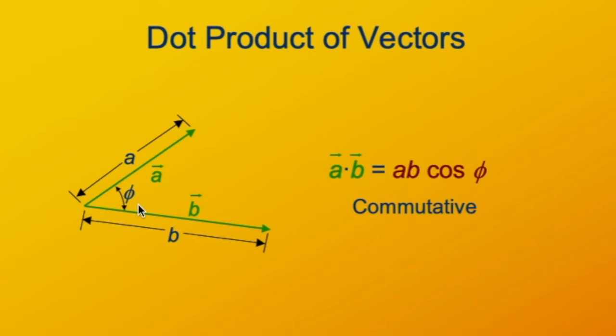That's because the cosine of the angle theta doesn't matter whether the angle is defined going from vector A to vector B or from vector B to vector A. Those two angles will be negatives of each other, but the cosine of an angle is the same as the cosine of its negative. Cosine is symmetric about zero.